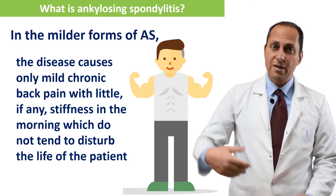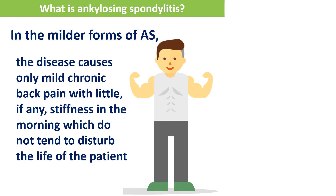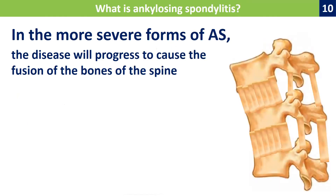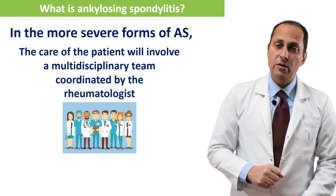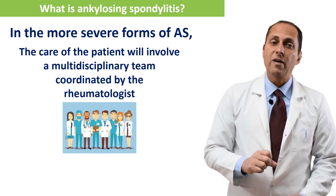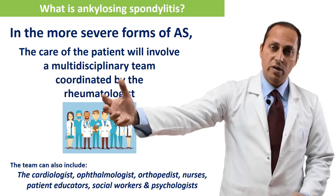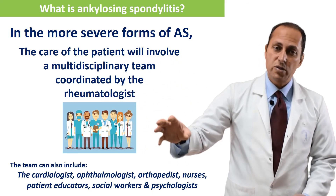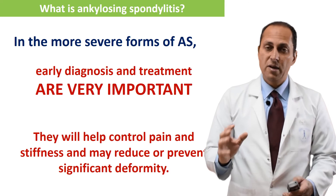Milder-form patients are sometimes diagnosed later, in their late 40s or early 50s, though we usually diagnose in the early 20s. In the more severe forms, the disease will progress to cause fusion of the bones of the spine — the arrows here point to ligaments transformed into bone tissue — resulting in a deformed, rigid, flexed spine that cannot extend. In the more severe forms, the care of the patient involves a multidisciplinary team coordinated by the rheumatologist, which can include a cardiologist, ophthalmologist, chest physician, and orthopedist, with the rheumatologist remaining the attending physician.